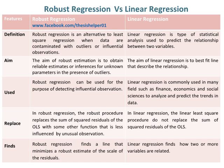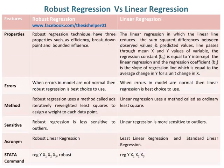Robust regression finds a line that minimizes a robust estimate of the scale of the residuals, whereas linear regression finds how two or more variables are related. Robust regression techniques have three properties: efficiency, breakdown point, and bounded influence.